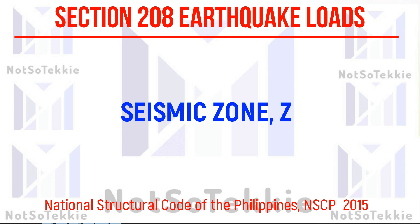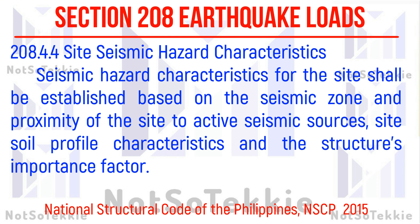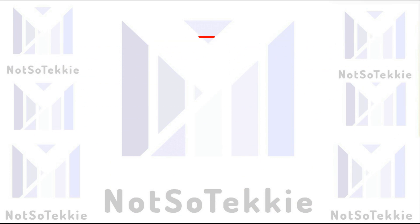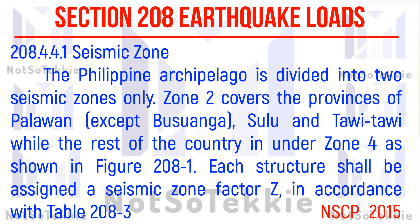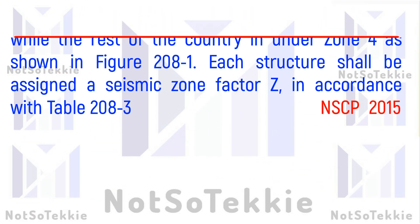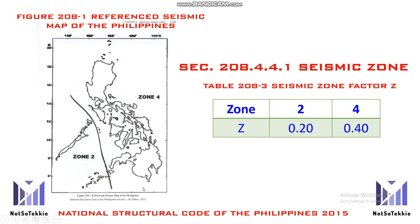For the seismic zone: seismic hazard characteristics for the site shall be established based on the seismic zone, proximity of the site to active seismic sources, site profile characteristics, and the structure's importance factor. The Philippine Archipelago is divided into 2 seismic zones only. Zone 2 covers the provinces of Palawan (except Buswanga), Sulu, and Tawi-Tawi, while the rest of the country is under Zone 4, as shown in Figure 208-1. Each structure shall be assigned a seismic zone factor Z in accordance with Table 208-3: Zone 2 has Z = 0.2, and Zone 4 has Z = 0.4.